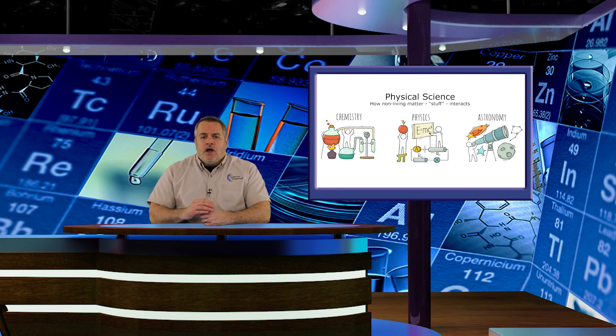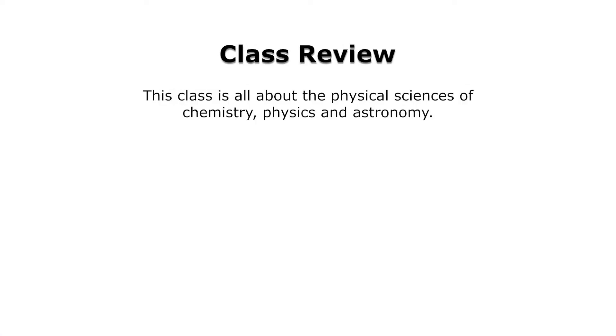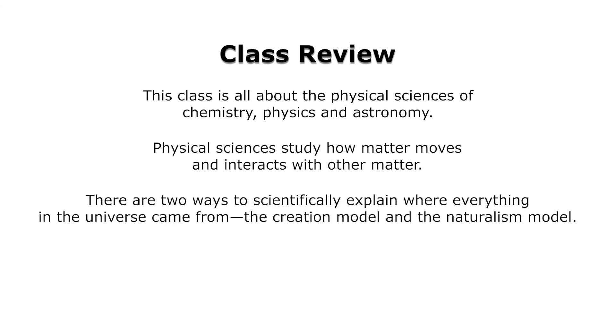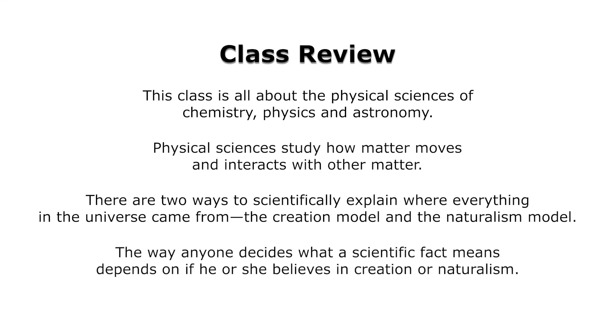Also, at the end of each class, I'll go through the key ideas from that class for the day, so here they are for today. This class is all about the physical sciences of chemistry, physics, and astronomy. Physical sciences study how matter moves and interacts with other matter. There are two ways to scientifically explain where everything in the universe came from: the creation model and the naturalism model. The way that anyone decides what a scientific fact means depends on if he or she believes in creation or naturalism.